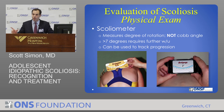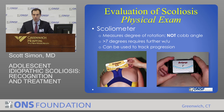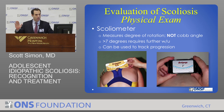A scoliometer reading greater than seven degrees is associated with a scoliotic curve greater than 20 degrees. You're looking at rotation, because scoliosis is not just a side-to-side curve — there's a rotational component to it. That rotation is actually more often visible than the lateral curve itself, typically bringing the right upper back or left lower back upward, which is the more common presenting feature.